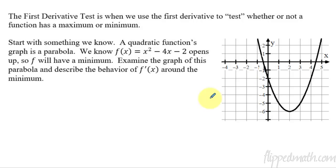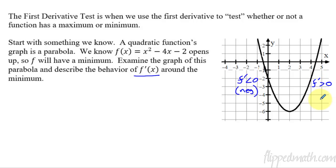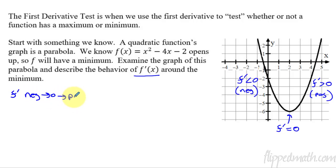Here's our graph of that parabola. Let's figure out and talk about the behavior of f prime. Right here, the slope — because f prime is the slope — the slope of f is negative. So on this side, f prime is less than zero, or in other words, it is negative. Over here, f prime is positive, greater than zero. And right here at this point, f prime is zero, the slope is zero. So what I have is a situation where f prime is negative, becomes zero, and then becomes positive. When you have this situation — negative, slope of zero, positive — you have a minimum.